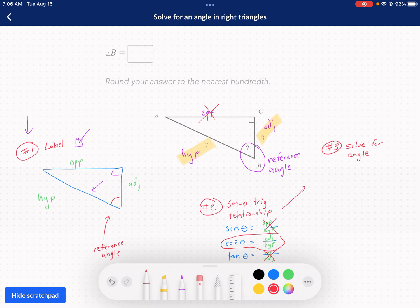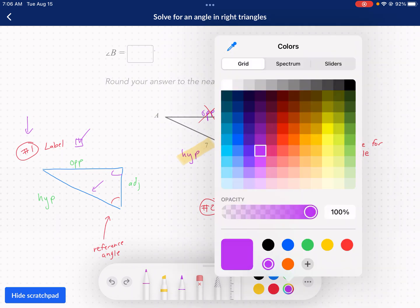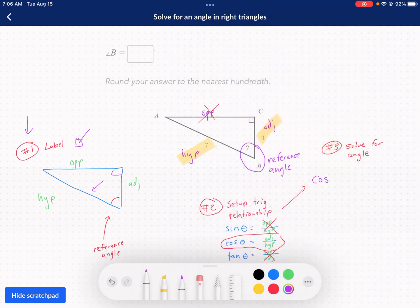This takes us to step three, which is solve for the angle. Let me show you what this looks like. We know we're going to be using cosine. I'll change it to purple. We don't know what angle B is, I'm going to put it like this, cosine of angle B. We know it's equal to the ratio of the adjacent side over the hypotenuse. This is the trig relationship we're using. Instead of theta, we're trying to find the measure of angle B. We know that the adjacent side is three units and the hypotenuse is seven. That's our trig relationship.